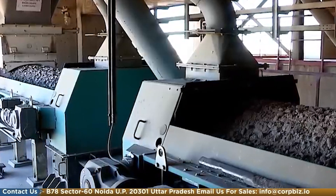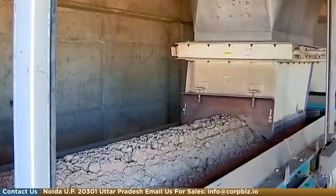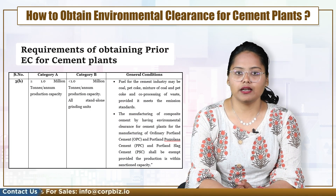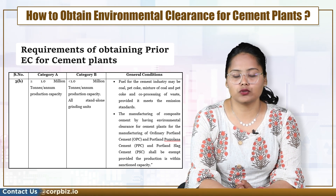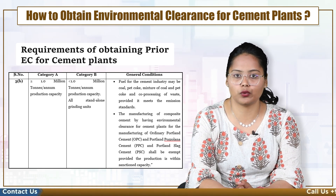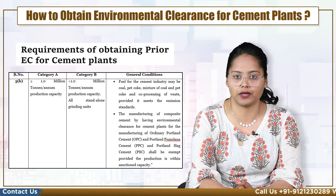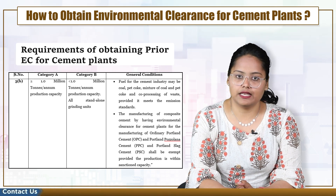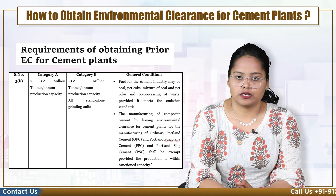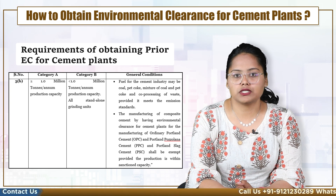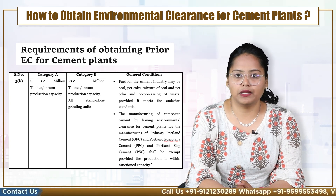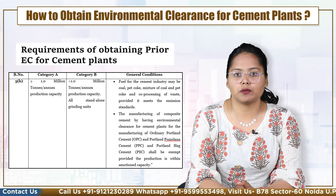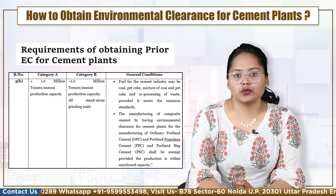It defines the categorization for the project based on production capacity and grinding units, falling under Category A and Category B. Category A includes projects having production capacity of more than or equal to 1 million tons per annum, handled by MoEF&CC and EAC. Category B projects include those having production capacity of less than 1 million tons per annum and all stand-alone grinding units, handled by CEA and SEAC.